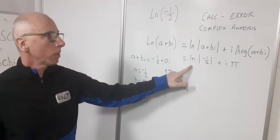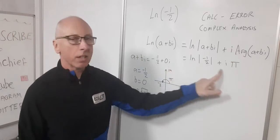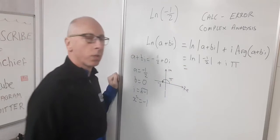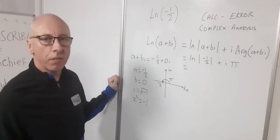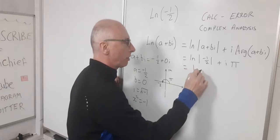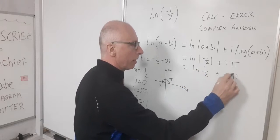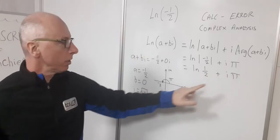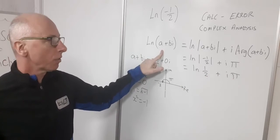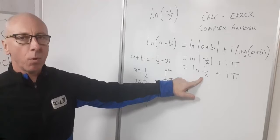Now we can break this down and solve this to get some result. The absolute value of minus one-half is a half. So the natural log of one-half plus i-pi. That's our imaginary component to our result of our natural logarithm.